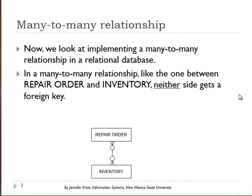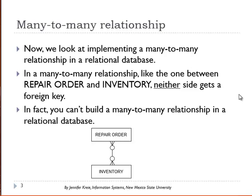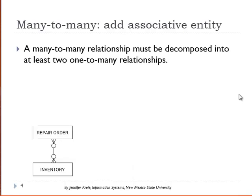In a many-to-many relationship, neither side gets the foreign key. In fact, you do not build many-to-many relationships in the database. A many-to-many relationship has to be broken down into at least two one-to-many relationships.